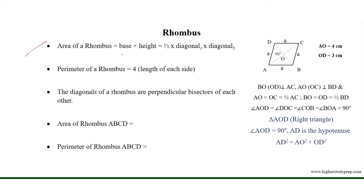The area of a rhombus equals base multiplied by height, which also equals half of diagonal one multiplied by diagonal two. The perimeter of a rhombus equals four times the length of each side. In the diagram for rhombus ABCD, AO equals 4 cm and OD equals 3 cm.